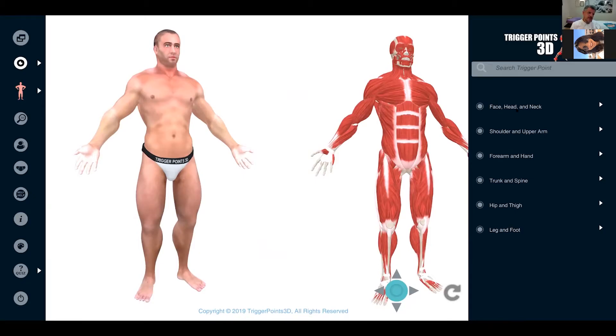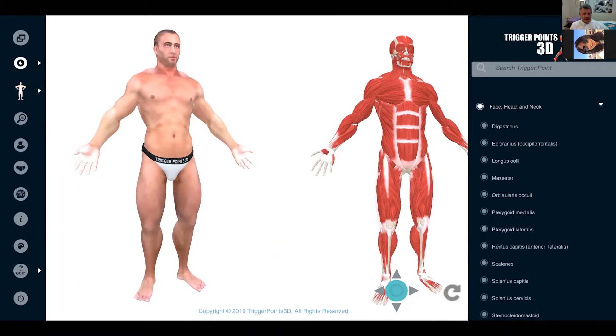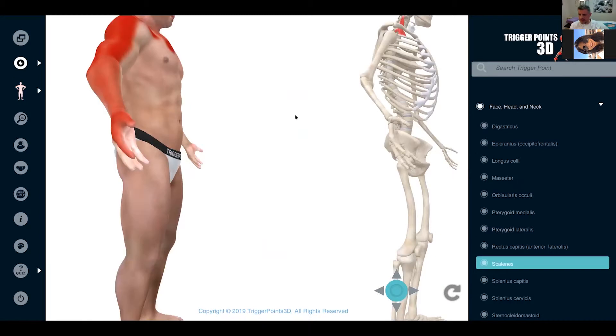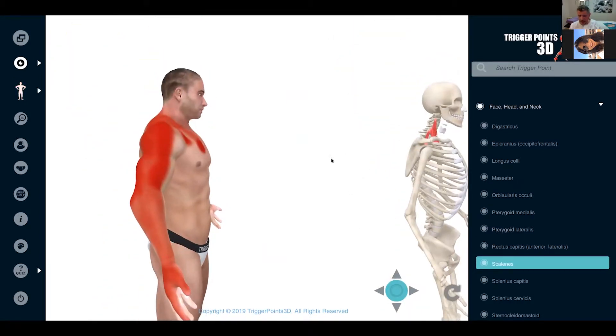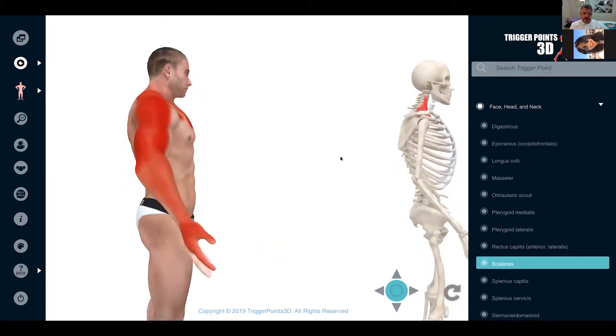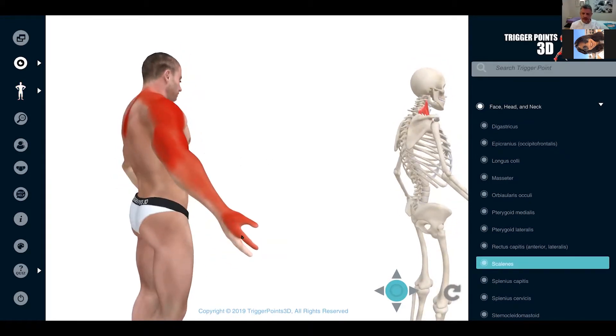Let's have a look at the scalenes. The scalene muscle pain map is interesting because it very much looks like a C5-6 radiculopathy. If you look at where the pain is...